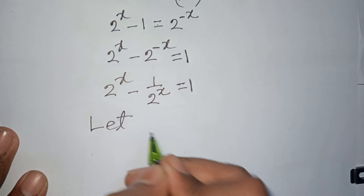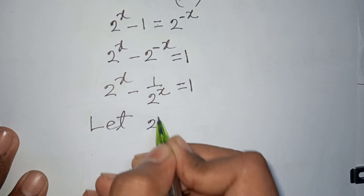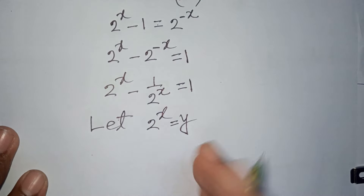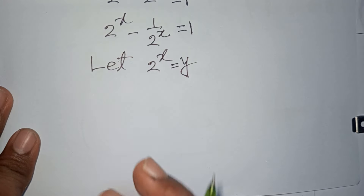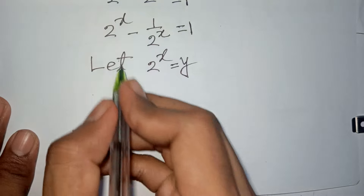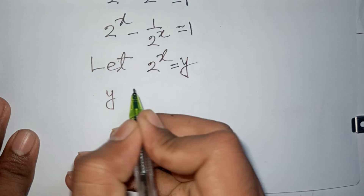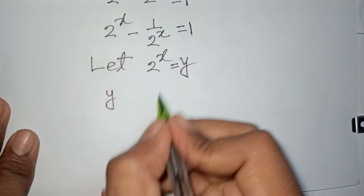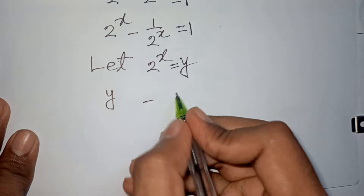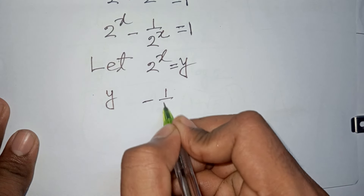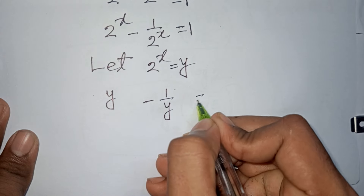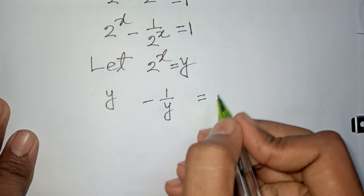Now let y equal 2^x. Our equation becomes y minus 1/y equals 1.